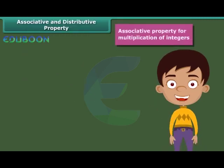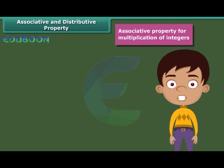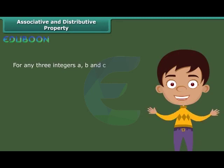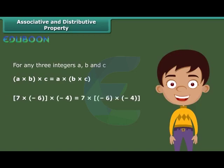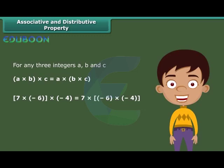The product of 3 integers does not depend upon the grouping of integers — this is called the associative property for multiplication of integers. For any 3 integers a, b, and c, (a into b) into c is equal to a into (b into c). For example, (7 into minus 6) into minus 4 is equal to 7 into (minus 6 into minus 4).